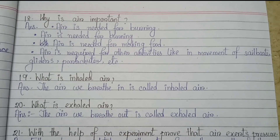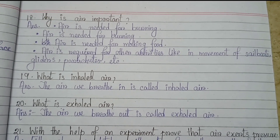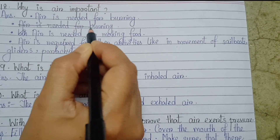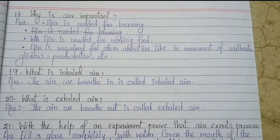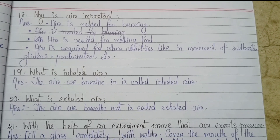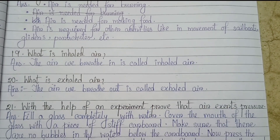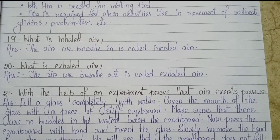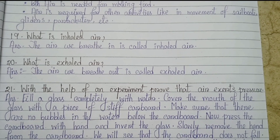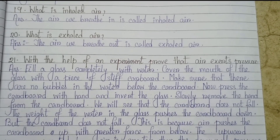Number 18: Why is air important? First, air is needed for burning. Next, air is needed for making food. Air is also required for other activities like movement of sailboats, gliders, parachutes etc. Number 19: What is inhaled air? The air we breathe in is called inhaled air. What is exhaled air? The air we breathe out is called exhaled air.